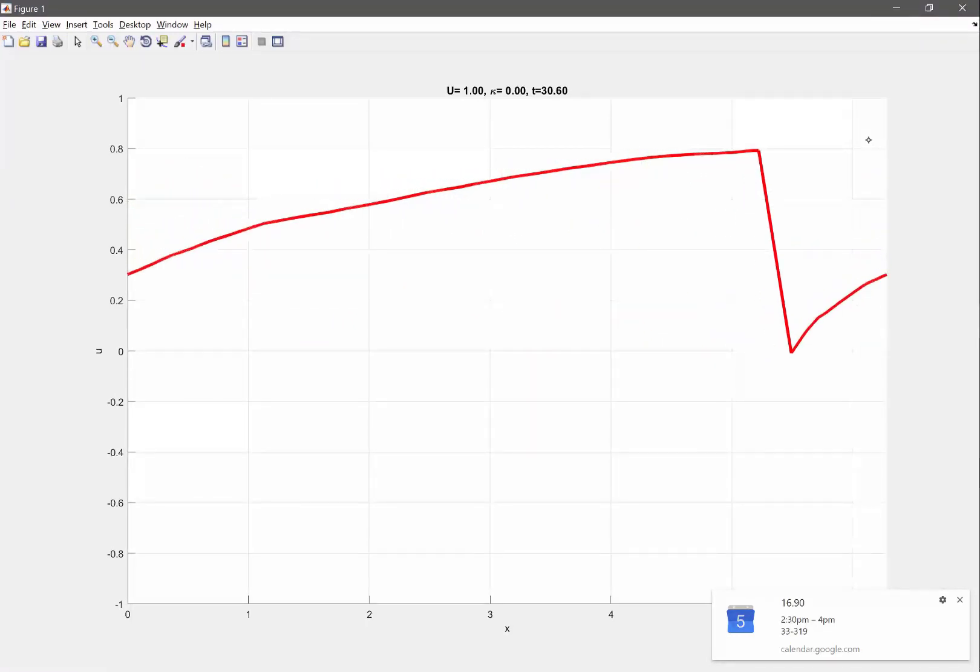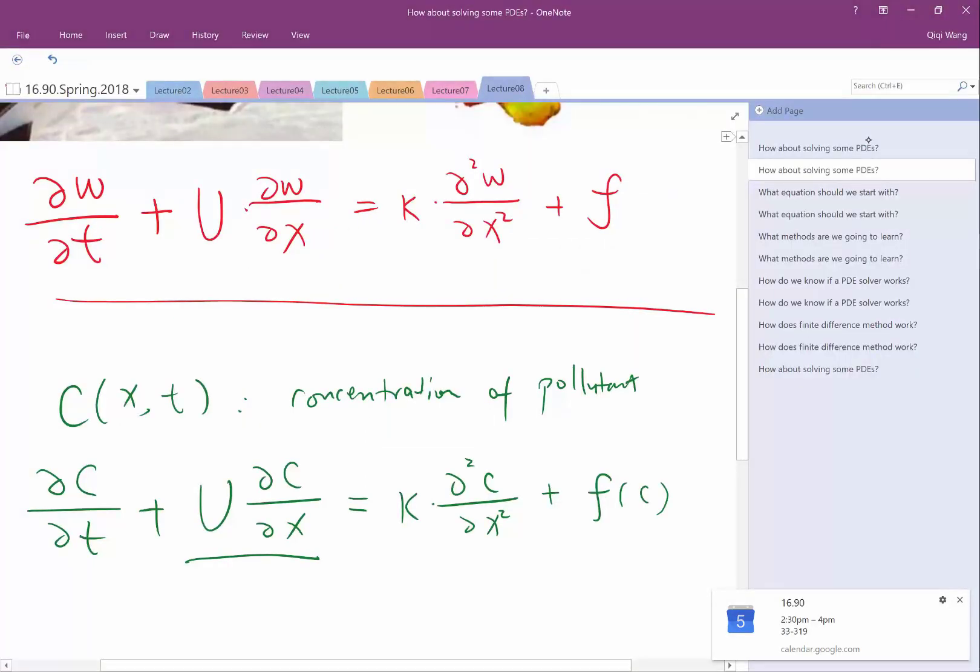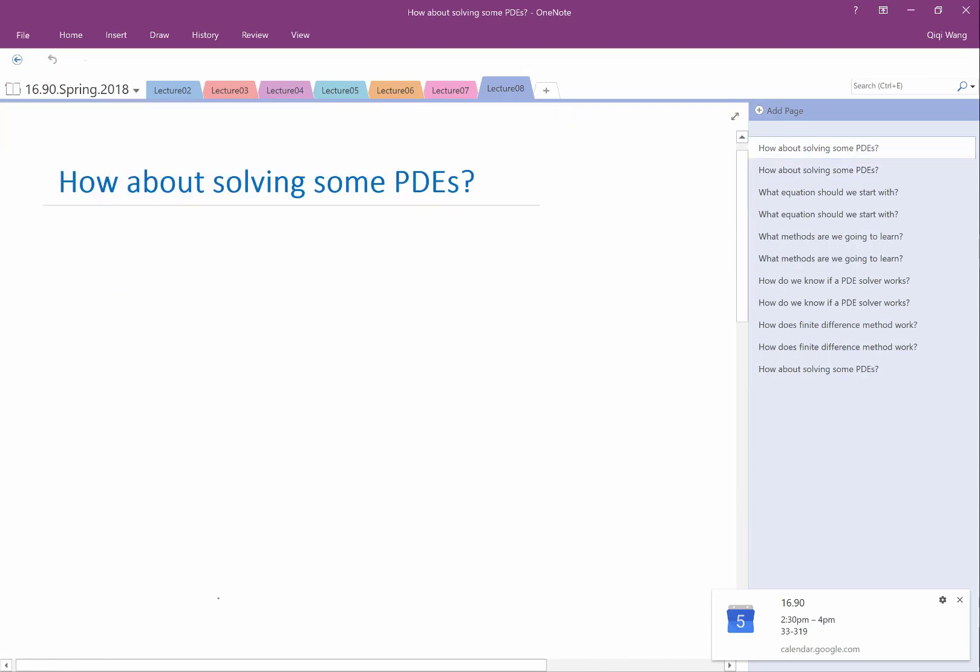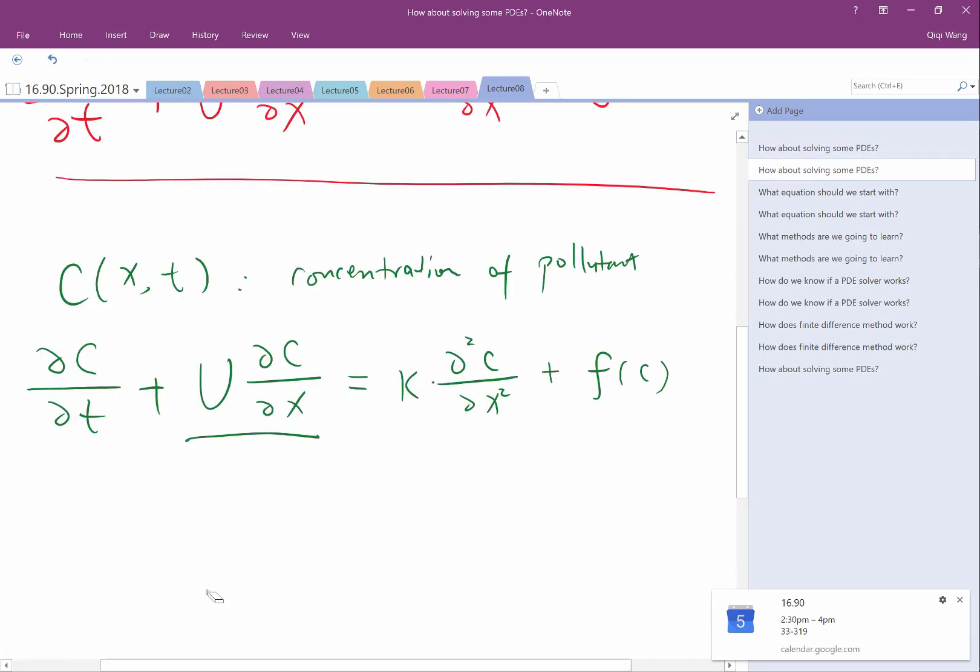So that is the behavior of this term. So basically, if you have a term that is proportional to the first derivative of the unknown solution with respect to x, what you get is like a translation in space. This term is what we call an advection term. Because it just translates things towards the right if u is positive.